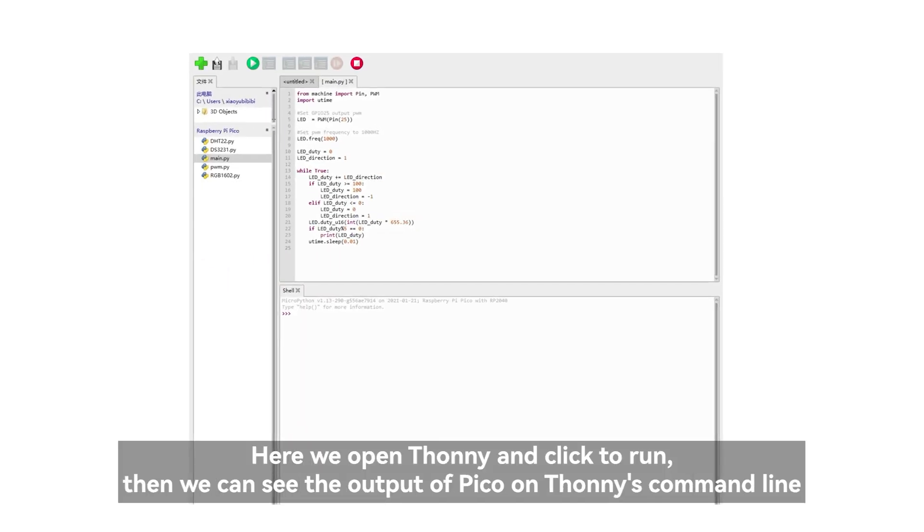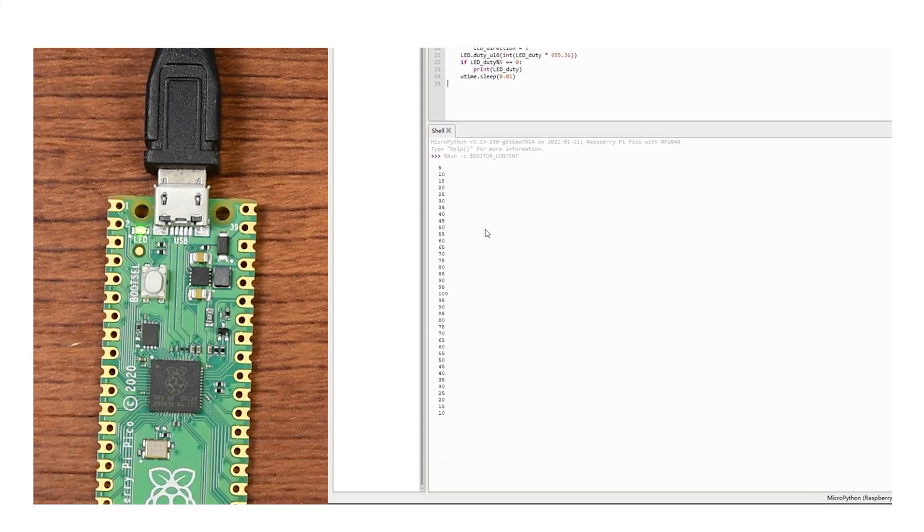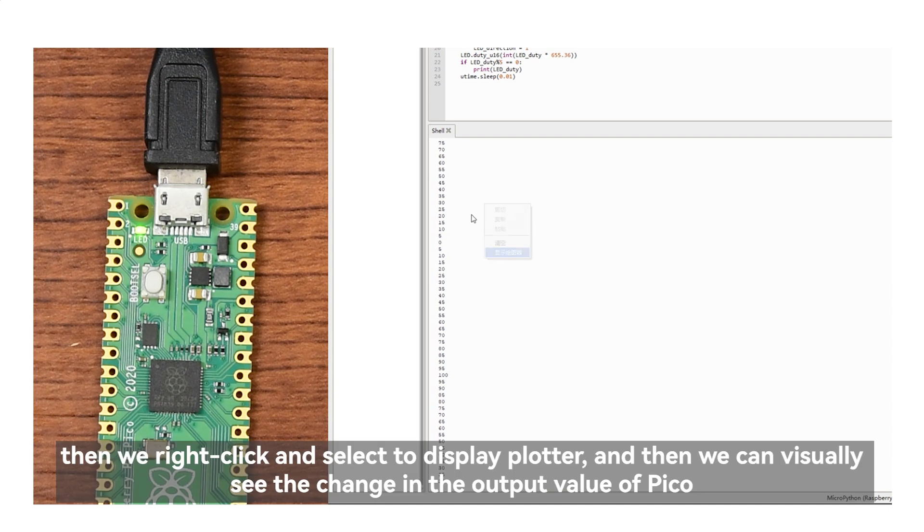Here we open Thonny and click to run, then we can see the output of PICO on Thonny's command line. Then we right click and select to display plotter and then we can visually see the change in the output value of PICO.